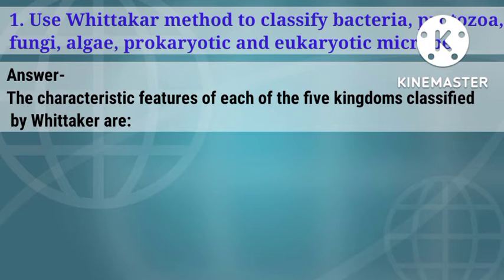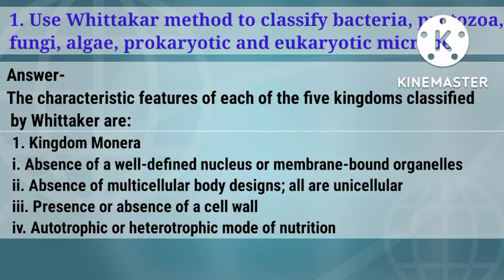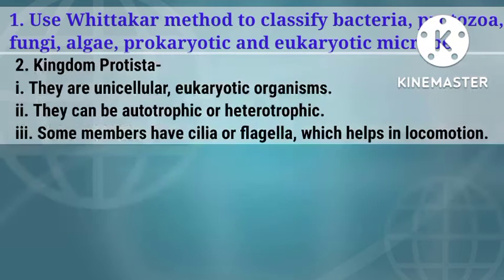The characteristic features of each of the five kingdoms classified by Whittaker are as follows. First, Kingdom Monera: characteristics are absence of a well-defined nucleus or membrane-bound organelles; absence of multicellular body designs — all are unicellular; presence or absence of a cell wall; and autotrophic or heterotrophic mode of nutrition.